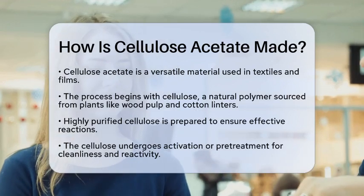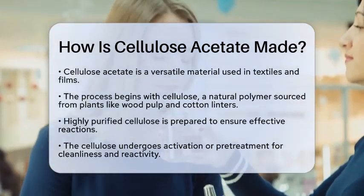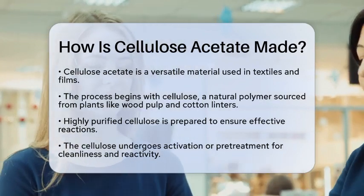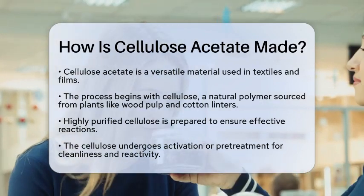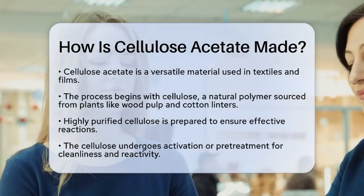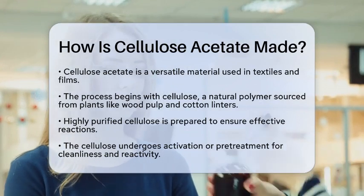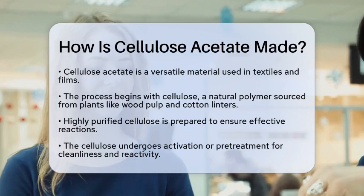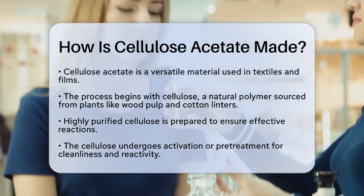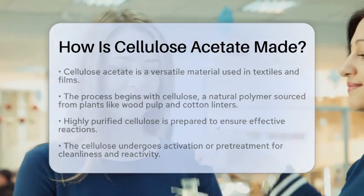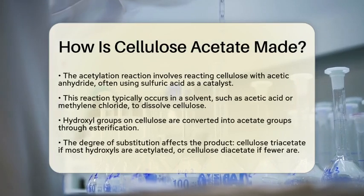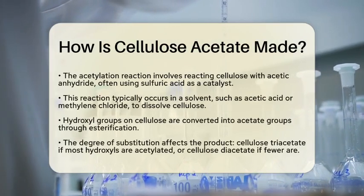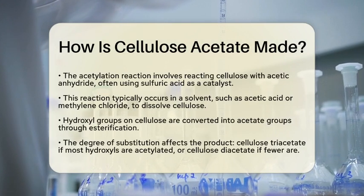Next comes the exciting part: the acetylation reaction. In this step, we react cellulose with acetic anhydride using a catalyst like sulfuric acid. This reaction typically takes place in a solvent, such as acetic acid or sometimes methylene chloride. The solvent helps dissolve the cellulose and control the reaction conditions. During this process, the hydroxyl groups on the glucose units of cellulose are converted into acetate groups through esterification.